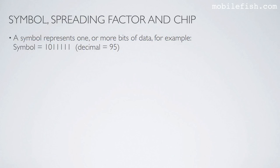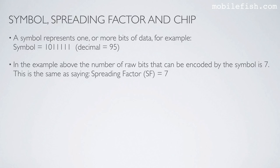A symbol represents one or more bits of data. For example, this symbol consists of 7 bits representing decimal value 95. In the example above, the number of raw bits that can be encoded by the symbol is 7, which means the symbol consists of 7 bits.